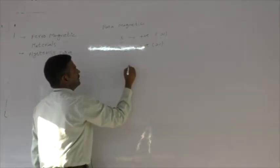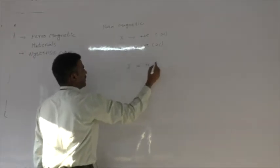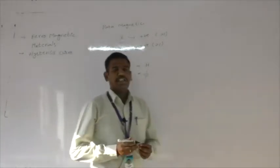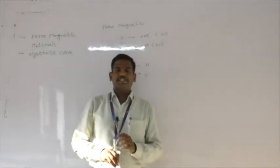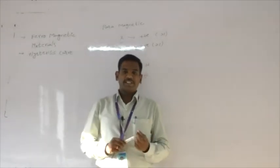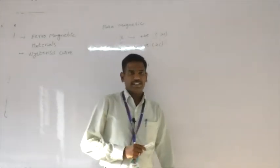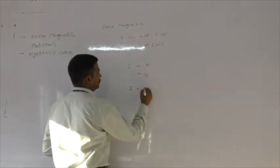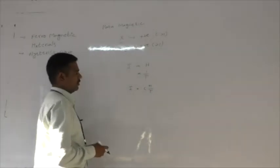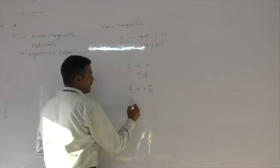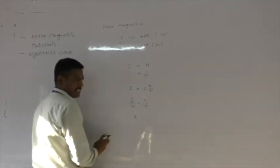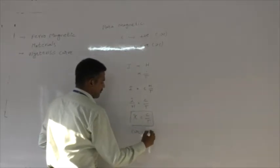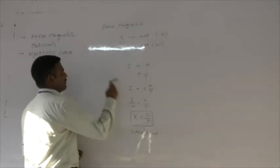In paramagnetic materials, the intensity of magnetization is directly proportional to the external magnetic field intensity and inversely proportional to temperature. More temperature means more randomness of magnetic atoms, so the net magnetic moment decreases. Combining these, I equals C times H divided by T, where C is Curie's constant. Therefore, magnetic susceptibility χ equals C divided by T.